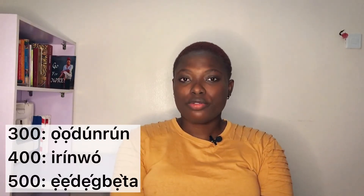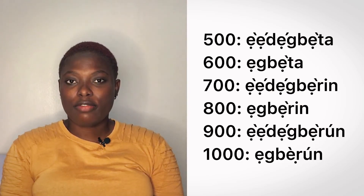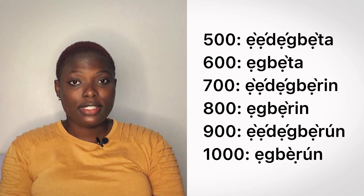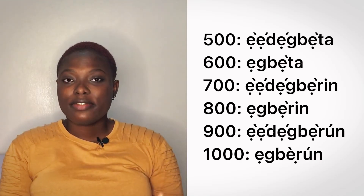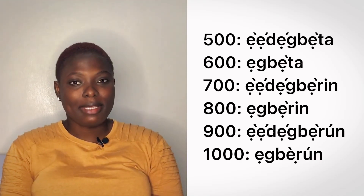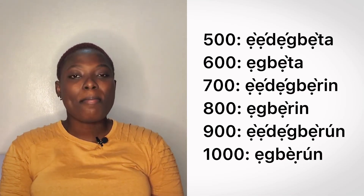300 is odor. 400 is erinwu. 500 is edegbeta. Counting in 100s as well, the priority number should be the even number so you can make sense of what the odd number will be. For instance, to get 500, first find 600 — which is edegbeta, meaning 200 times 3. Then 500 is edegbeta minus 100.